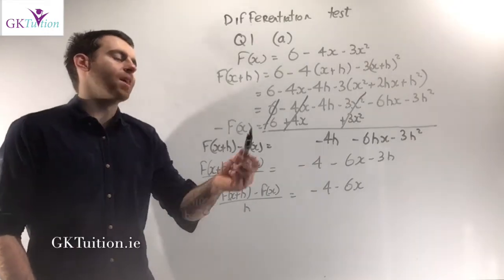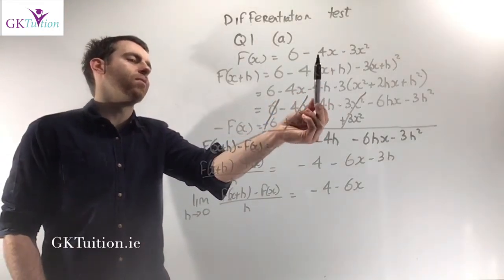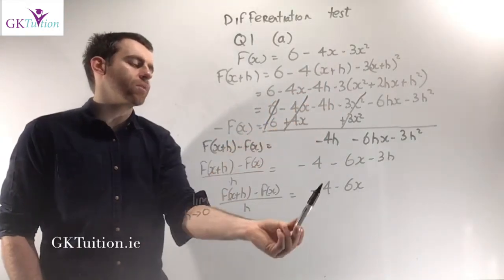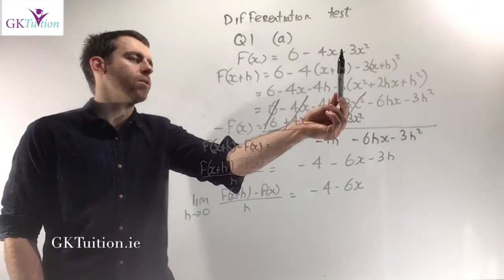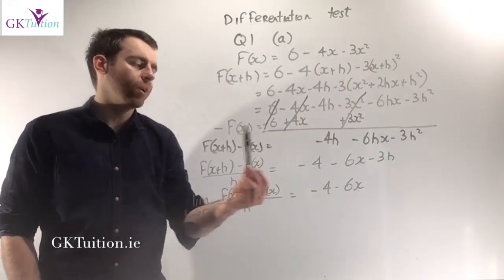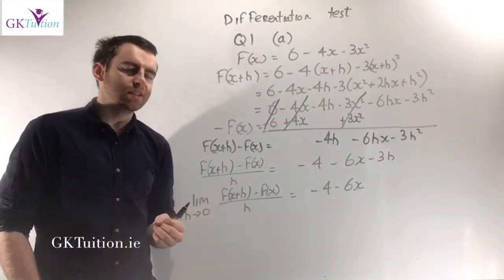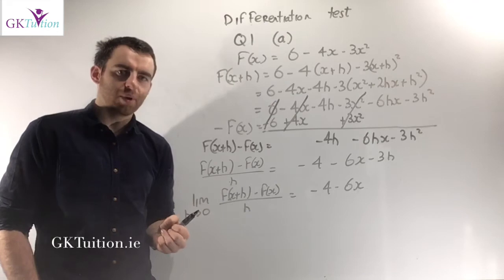I can confirm from the original question that the derivative of minus 4x is minus 4 and the derivative of minus 3x squared is minus 6x. That's what you needed for full marks in part A.